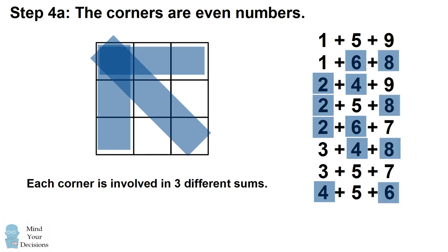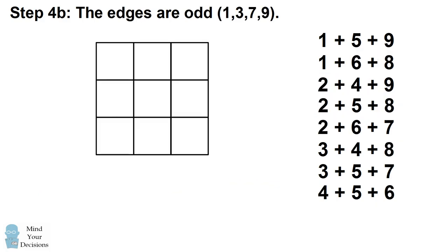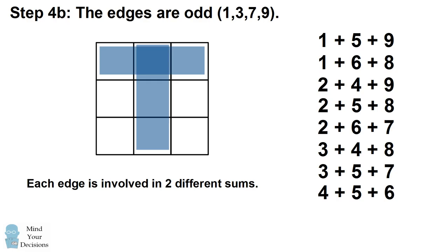So we know the corners would have to be 2, 4, 6, and 8. And finally, every edge is involved in a row sum and a column sum, so it's involved in exactly 2 distinct sums. If we look at our list of sums that get up to 15, this would be the numbers 1, 3, 7, and 9.